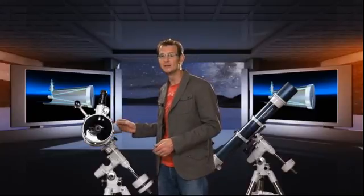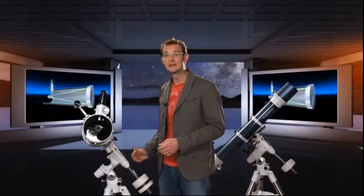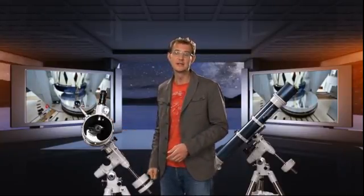In a reflecting telescope, the starlight bounces off a mirror instead of passing through a lens. That means that you can make the mirror a lot thinner than a lens and you can support it from the back. The result is that you can build a lot larger mirrors than lenses.